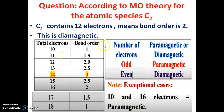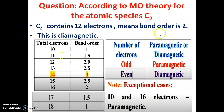C₂ contains 12 electrons. From our trick, 12 electrons gives bond order 2. And 12 is an even number — and it is neither 10 nor 16 — so it is diamagnetic. Therefore, the correct answer is D: C₂ has bond order 2 and it is diamagnetic. Thank you.